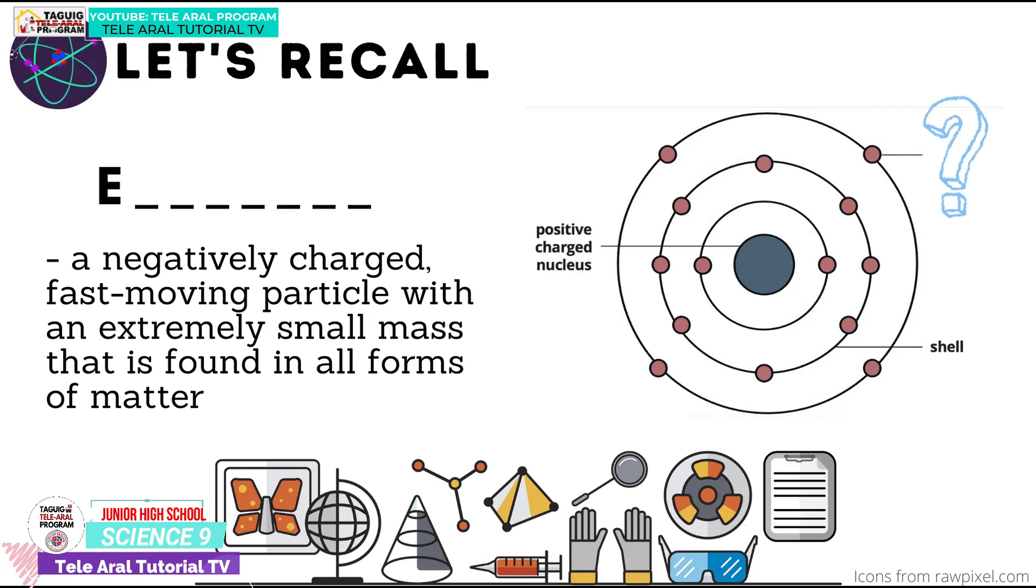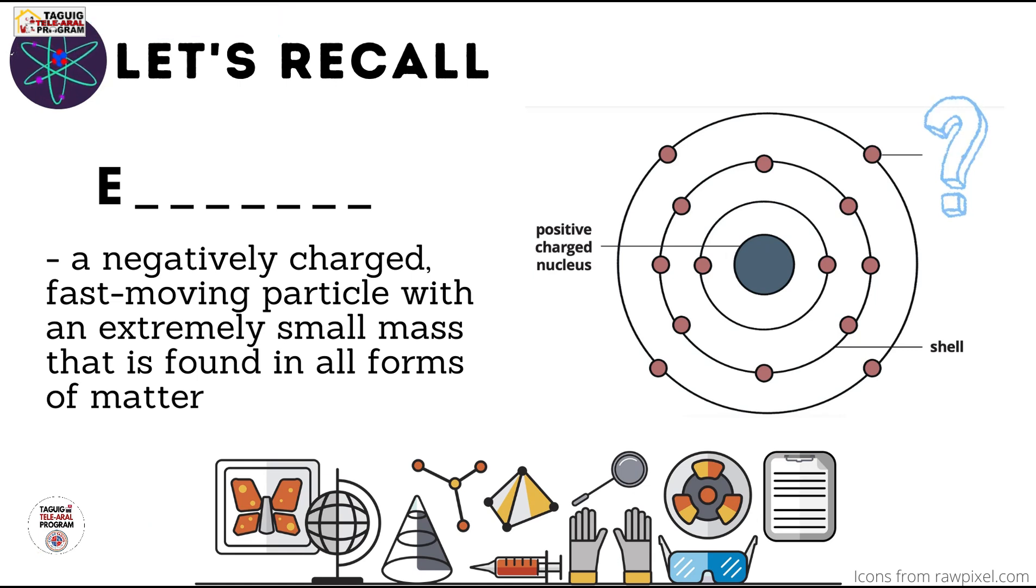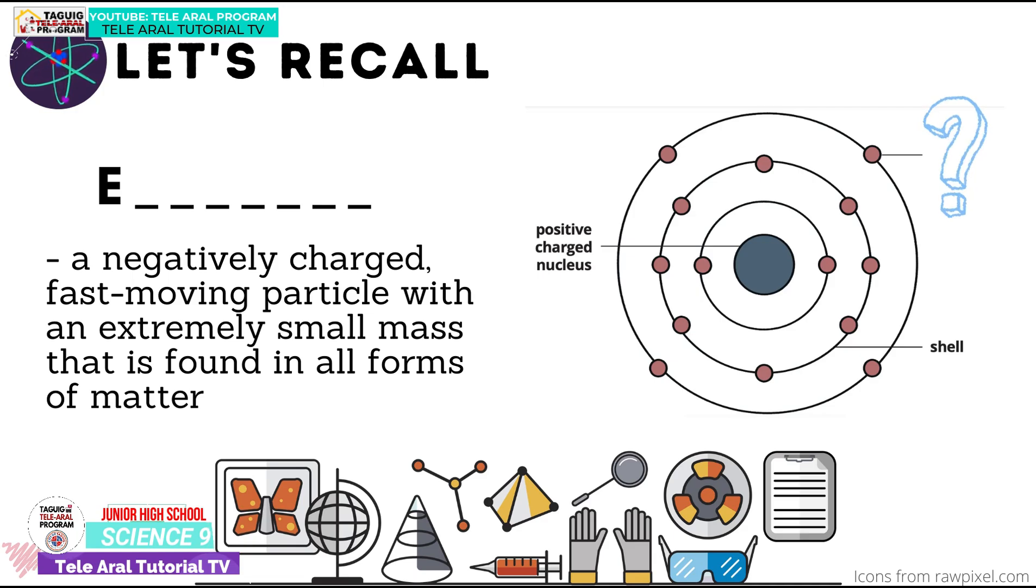Third, it is a negatively charged, fast-moving particle with an extremely small mass that is found in all forms of matter and moves through the empty space surrounding an atom's nucleus. Alright, the answer is electron.